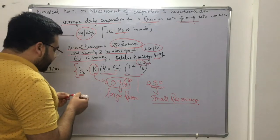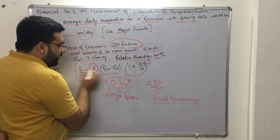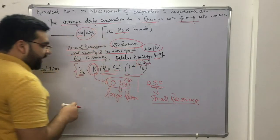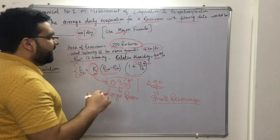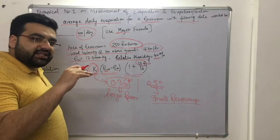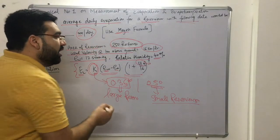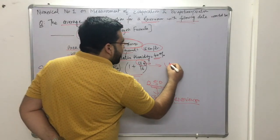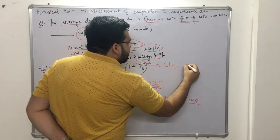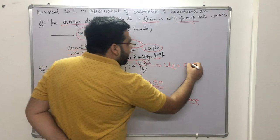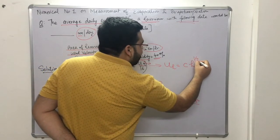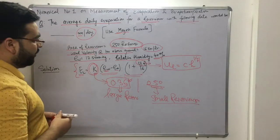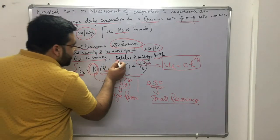We know K and ew, but we need to find ea and u9. To find u9, we use the wind velocity-height relationship: velocity at height H equals a constant C multiplied by H raised to the power 1/7. This formula is valid up to 500 meters height.